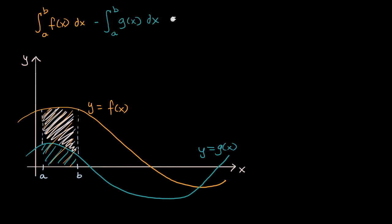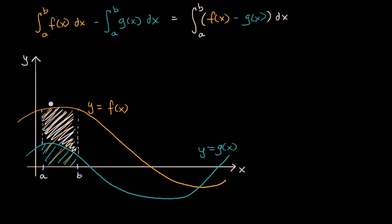We know from our integration properties that we can rewrite this as the integral from a to b of f of x minus g of x dx. And I will make a claim: over an interval from a to b where f of x is greater than g of x, like this interval right over here, this is always going to be the case — that the area between the curves is going to be the integral from a to b of f of x minus g of x dx.